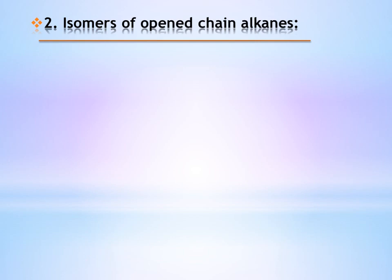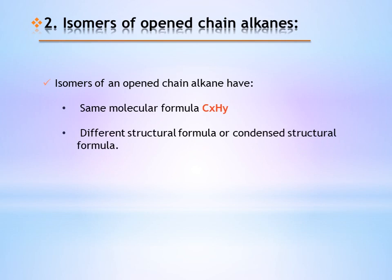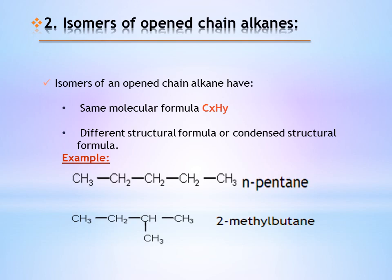Isomers of an open chain alkane — what are isomers? Isomers have the same molecular formula CxHy but different structural or condensed structural formulas. For example, N-pentane contains 5 carbons and 12 hydrogens, and 2-methylbutane is branched but also has 5 carbons and 12 hydrogens. So the molecular formula of both is C5H12. Therefore, they are isomers — same molecular formula but different condensed structural formula.